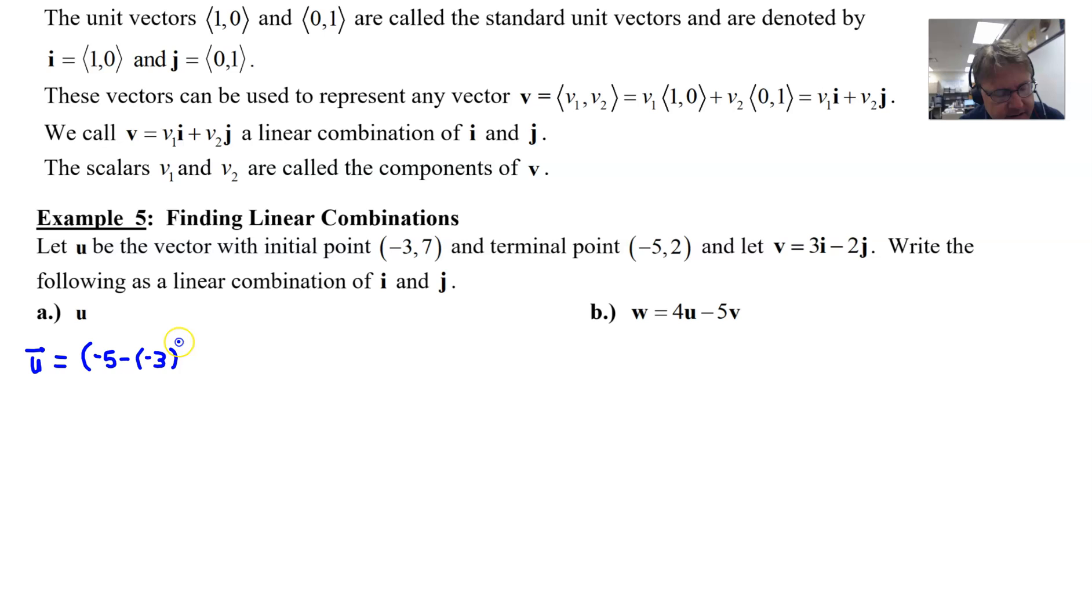And all of those, or that result I should say, will get multiplied by the unit vector i. We'll add to that a similar process with our second components, where we start with 2, the terminal value, subtract 7, the initial value of the second component, and that would be multiplied by the unit vector j. By the time we do a little simplifying here, we end up with -2i - 5j. And that's the linear combination that we sought in part A.